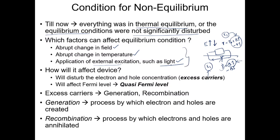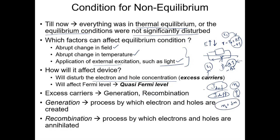Any excitation across the device leads to disturbing the electron and hole concentration. The transport across the device — whether it is drift current or diffusion current — both depend on the electron or hole concentrations. If the equilibrium electron concentration n₀ changes to n₀ plus delta n, then the drift and diffusion transport are going to be affected. If there is an excess electron generated, there will also correspondingly be an excess hole generated.